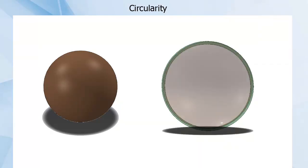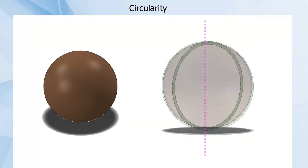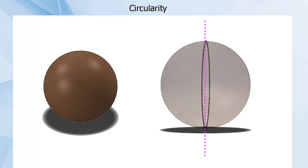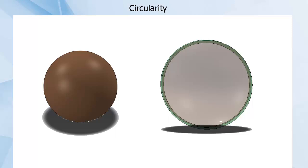In this case, the cross-section plane spins around the center of the sphere and does not stay perpendicular to an axis. For each cross-section measured this way, the surface points must fall within a circular TZ.